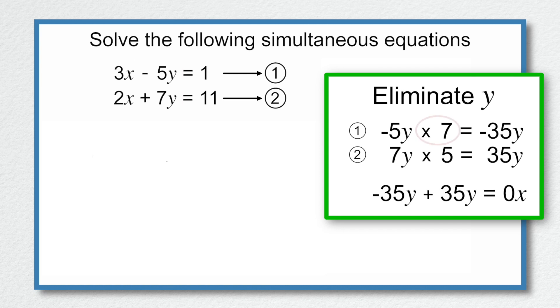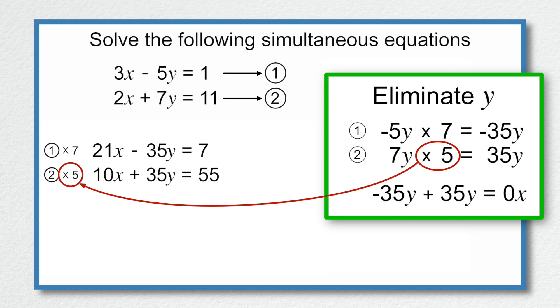So for equation 1, let's multiply by 7. So that's 21x subtract 35y is equal to 7. And for equation 2, let's multiply by 5. So that's 10x add 35y is equal to 55. And we'll label these equations 3 and 4 respectively.